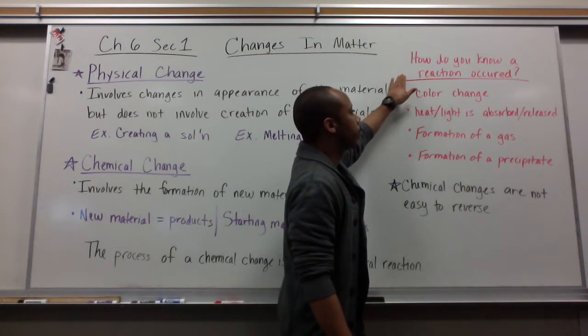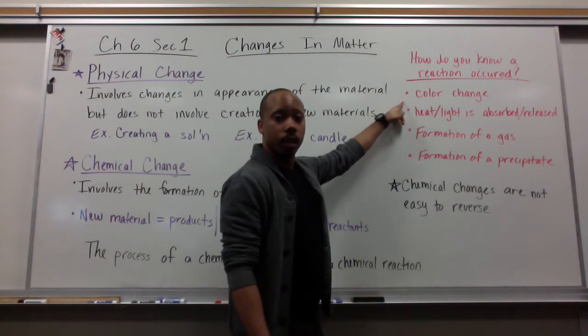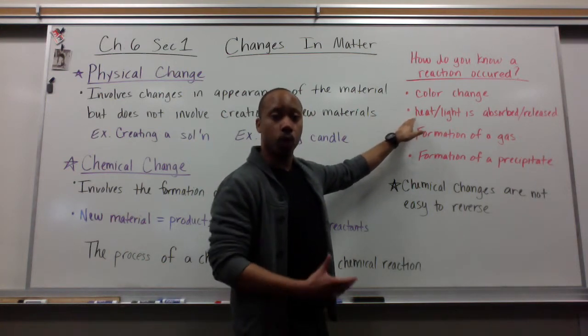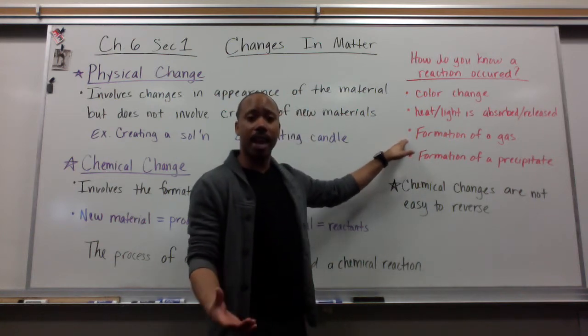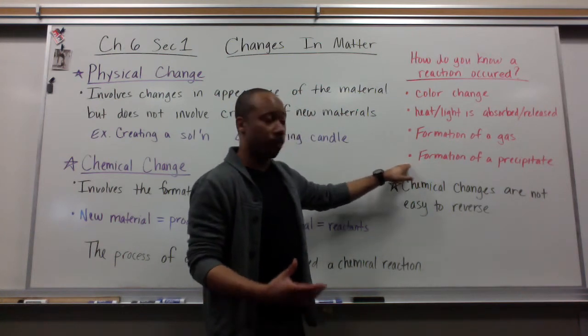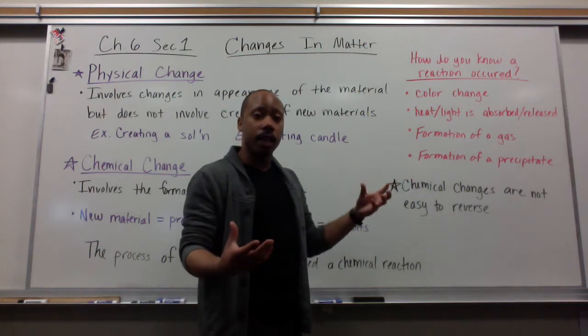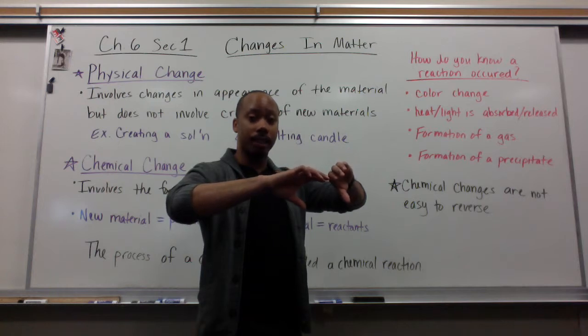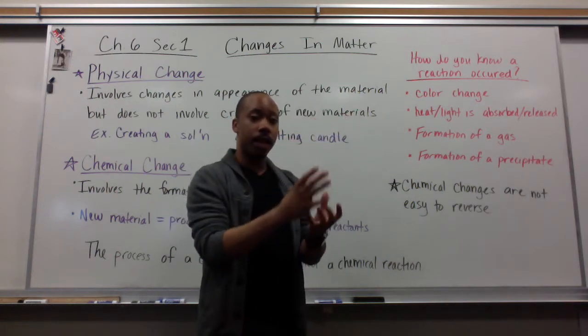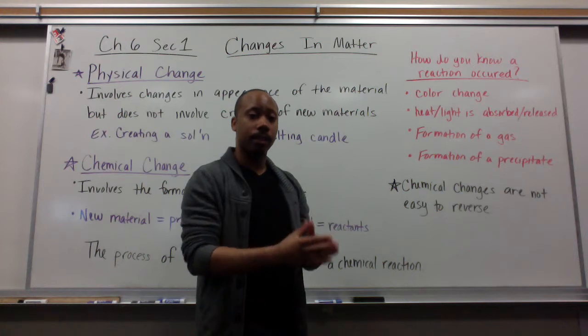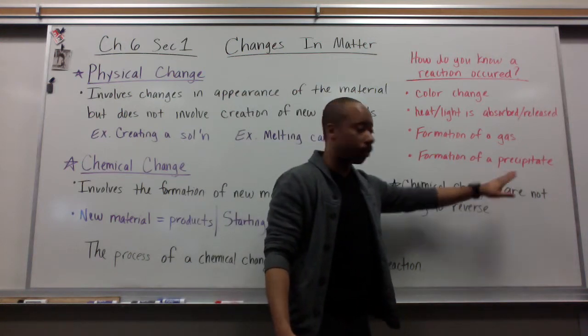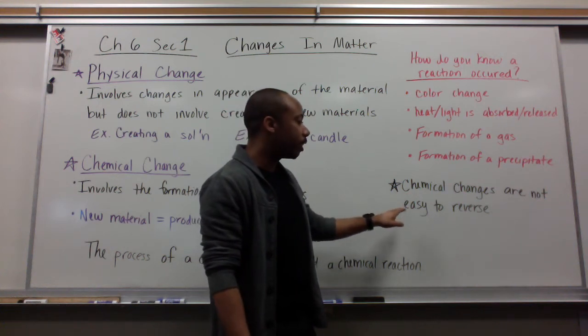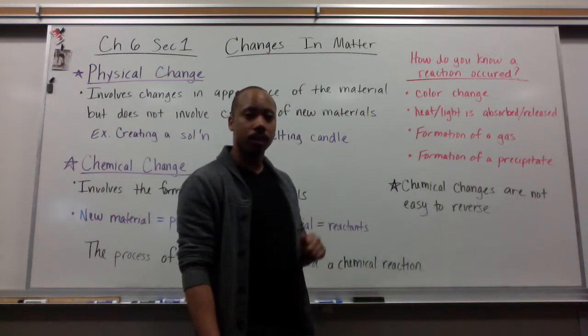Now how do we know that a chemical reaction has happened? There are some ways to tell. It could be a color change, heat or light is absorbed or released, formation of a gas, or formation of a precipitate. A precipitate is simply a solid that forms out of two solutions being combined together. One important note is that chemical changes are not easy to reverse.